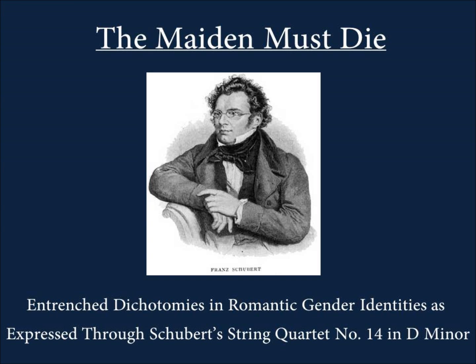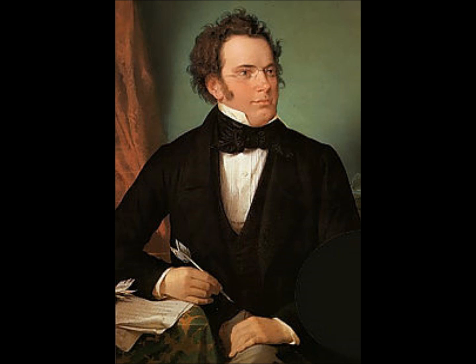Franz Schubert was born in Vienna, Austria in 1797, at the end of the century of Enlightenment and at the beginning of a new era of Romanticism. His first music instruction was under his father's tutelage, but by age 11 Schubert caught the eye of Antonio Salieri and won a scholarship to study at the Imperial Seminary. By his teenage years, Schubert was writing respected compositions.